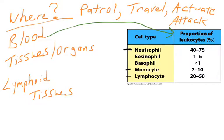Eosinophils and basophils make up a very low percentage of leukocytes in the bloodstream because they are found primarily in organs and tissues. Mast cells aren't even found in the bloodstream — they are located exclusively inside organs and tissues. So the three main locations of immune cells are the bloodstream, organs and tissues, and lymphatic tissues.